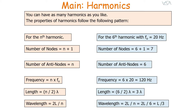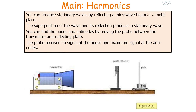The length of our string is six over two times the wavelength, so the string will contain three wavelengths. The wavelength is two lengths of the string over six, so therefore it's the length of the string divided by three.